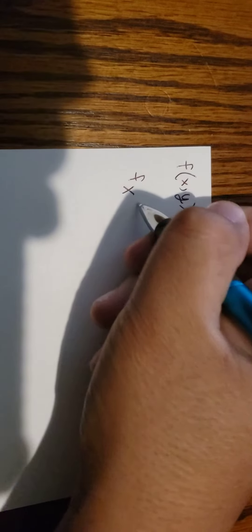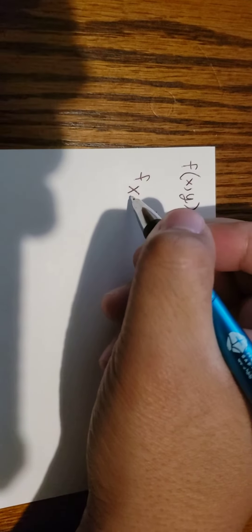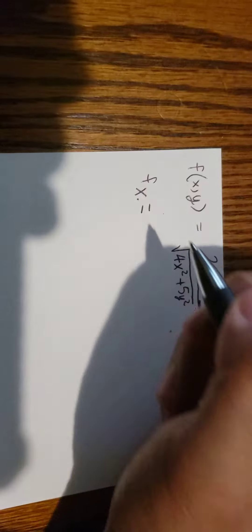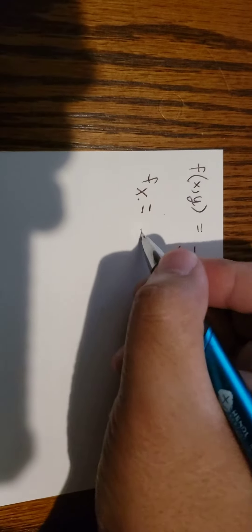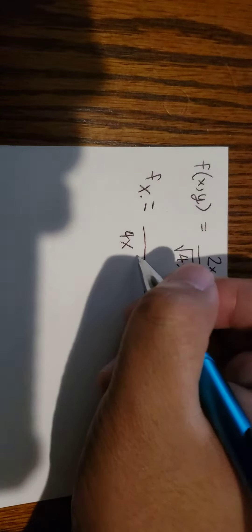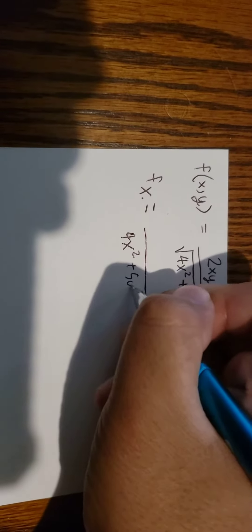We do differentiation with respect to x. This one is about quotient. So we will put 4x square plus 5y square.